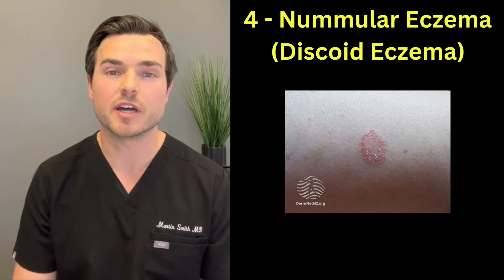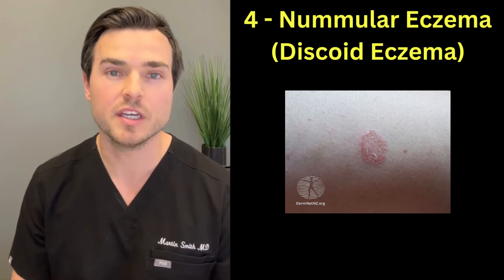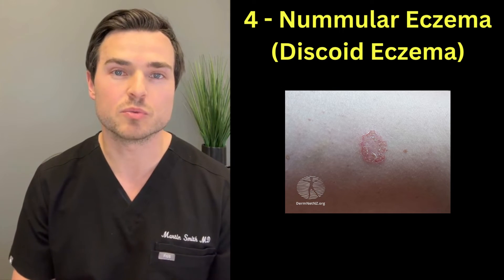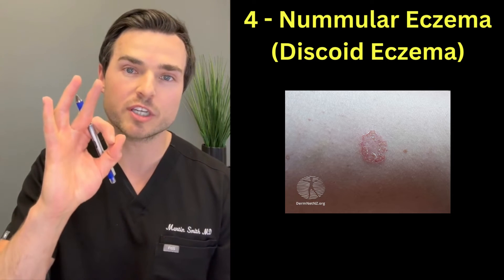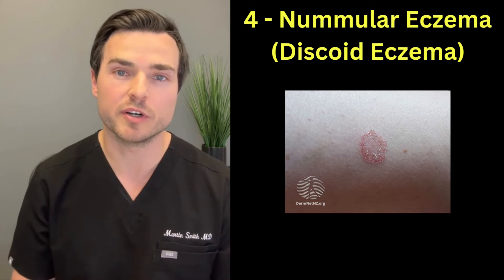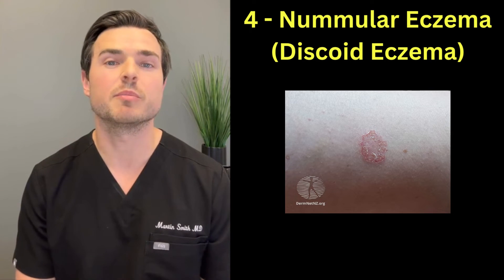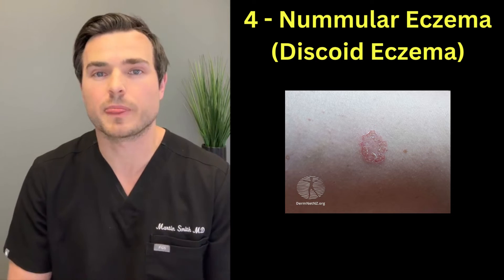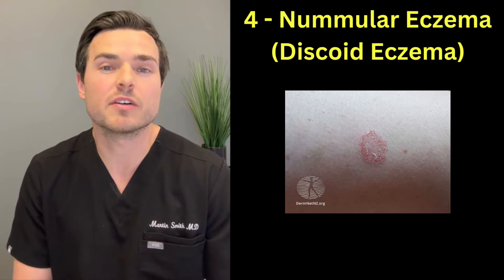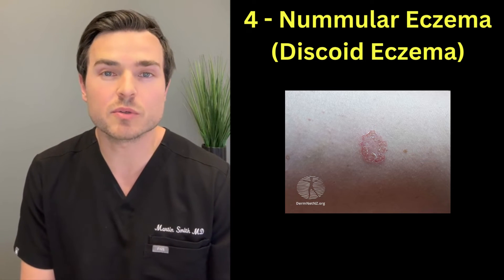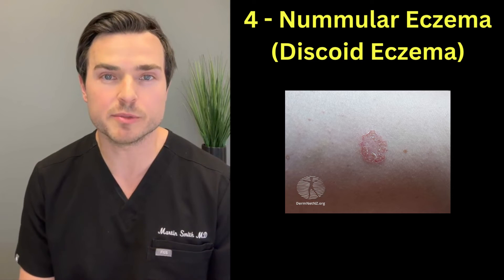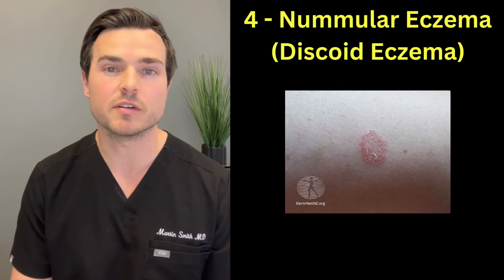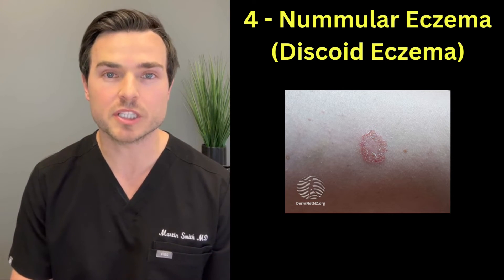Next up we have nummular or discoid eczema. It's called that because it causes red, raised, coin-shaped spots. This usually occurs in people over the age of 50 and affects men more commonly. It's usually found on the arms or the legs and sometimes the lower abdomen. Treatment is similar to that of atopic dermatitis.